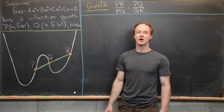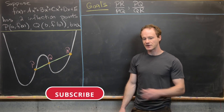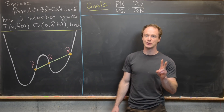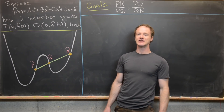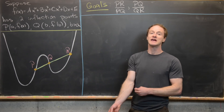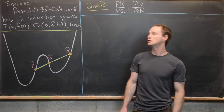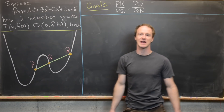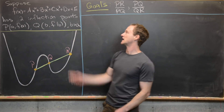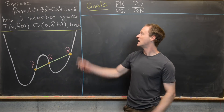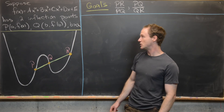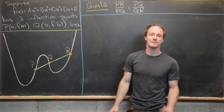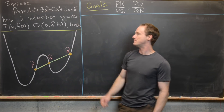Here we're going to look at an interesting property regarding quartic polynomials. Suppose that we have a sufficiently general quartic polynomial that has two inflection points — in other words, its concavity changes twice, or its second derivative is zero at two real numbers. We have a general quartic: Ax⁴ + Bx³ + Cx² + Dx + E, with inflection points P and Q occurring at (A, F(A)) and (B, F(B)). Without loss of generality, assume B > A.